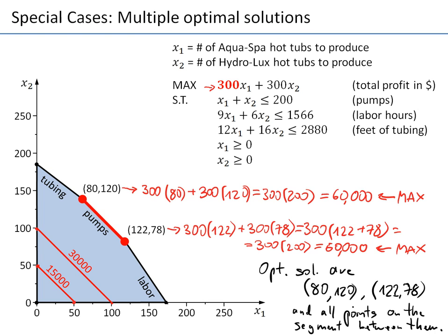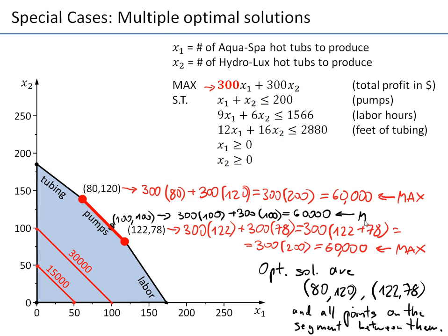For example, there is a point somewhere here — (100, 100). It is on the line because 100 + 100 = 200, which satisfies the pumps constraint with equality. And this point gives a value of 300×100 + 300×100 = 300×200 = $60,000 — still the maximum profit. So (100, 100) is also an optimal solution. Optimal solutions are those two corner points and all points on the segment in between them.